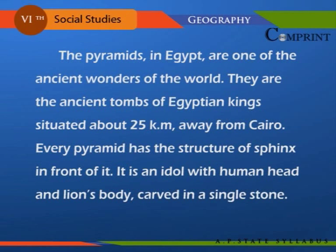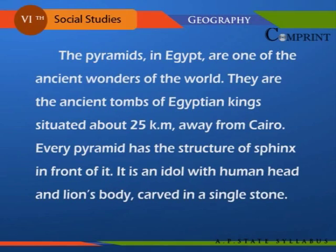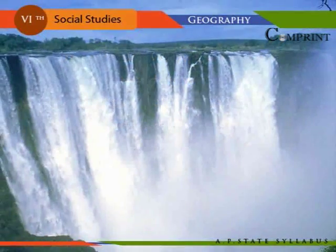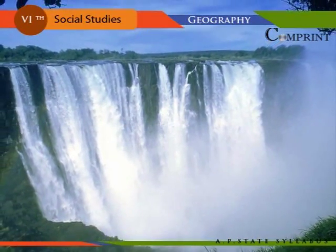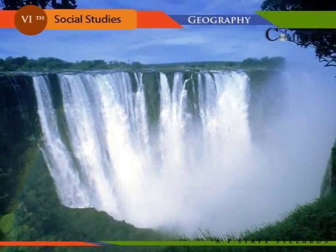The pyramids in Egypt are one of the ancient wonders of the world. They are the ancient tombs of Egyptian kings, situated about 25 kilometers away from Cairo. Every pyramid has a structure of the Sphinx in front of it — an idol with a human head and a lion's body carved in a single stone. Victoria Falls on the river Zambezi is another tourist center.